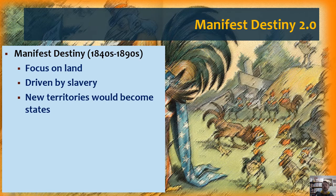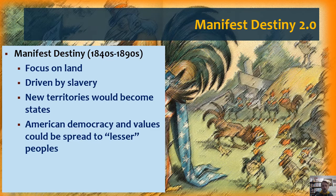Once those new lands get conquered, they become states — part of the United States. And the people who live in those lands eventually become citizens once they go through the process of becoming a state. The justification for Manifest Destiny was not only that it was God-given, but that it would spread democracy and America's values to these lesser, backwards, uncivilized peoples on the frontiers.